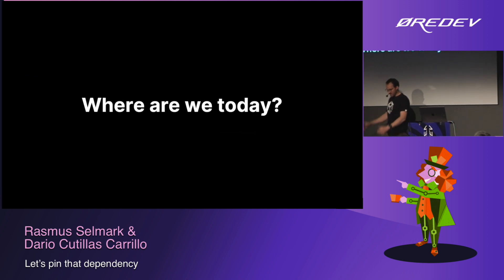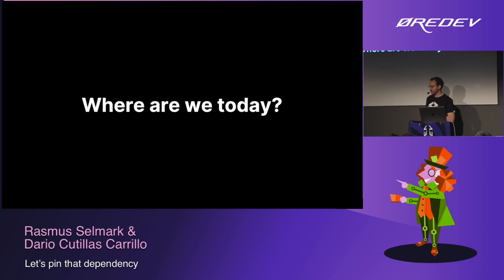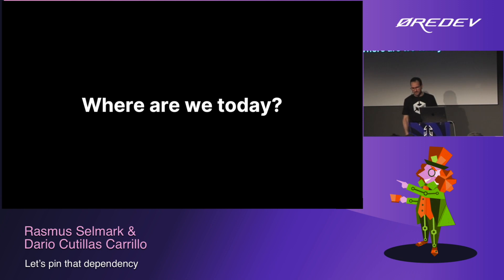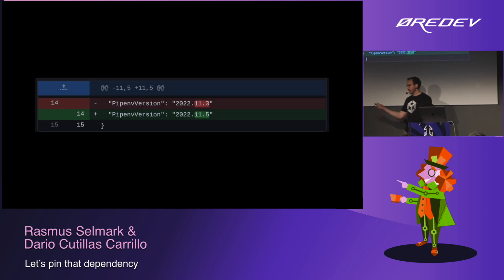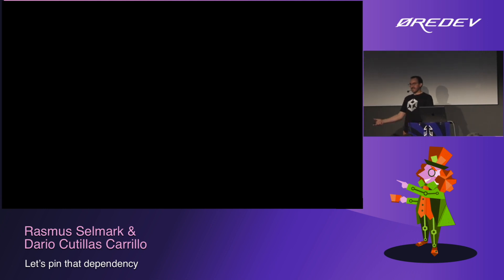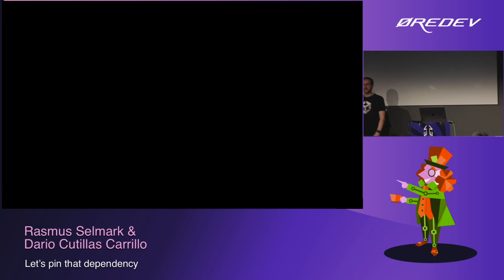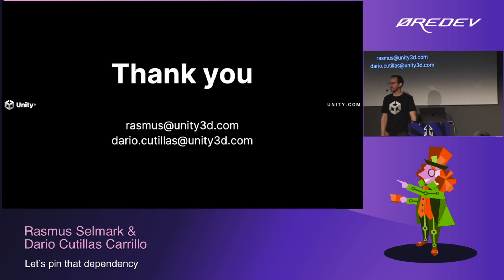Where are we at today? We believe that our CI stability has improved considerably since we started pinning. We also see more and more people in our organization adopting these ideas, but we still have to invest a lot in strategies to apply this at an organizational level — to handle the noise of PRs created by Renovate, we need more automation. But we think we are in a better place than when we started. And I'm happy to share that we actually managed to pin and keep the Pipenv version that led to this presentation today. Thank you very much for being here, and we look forward to hearing your ideas on this topic.